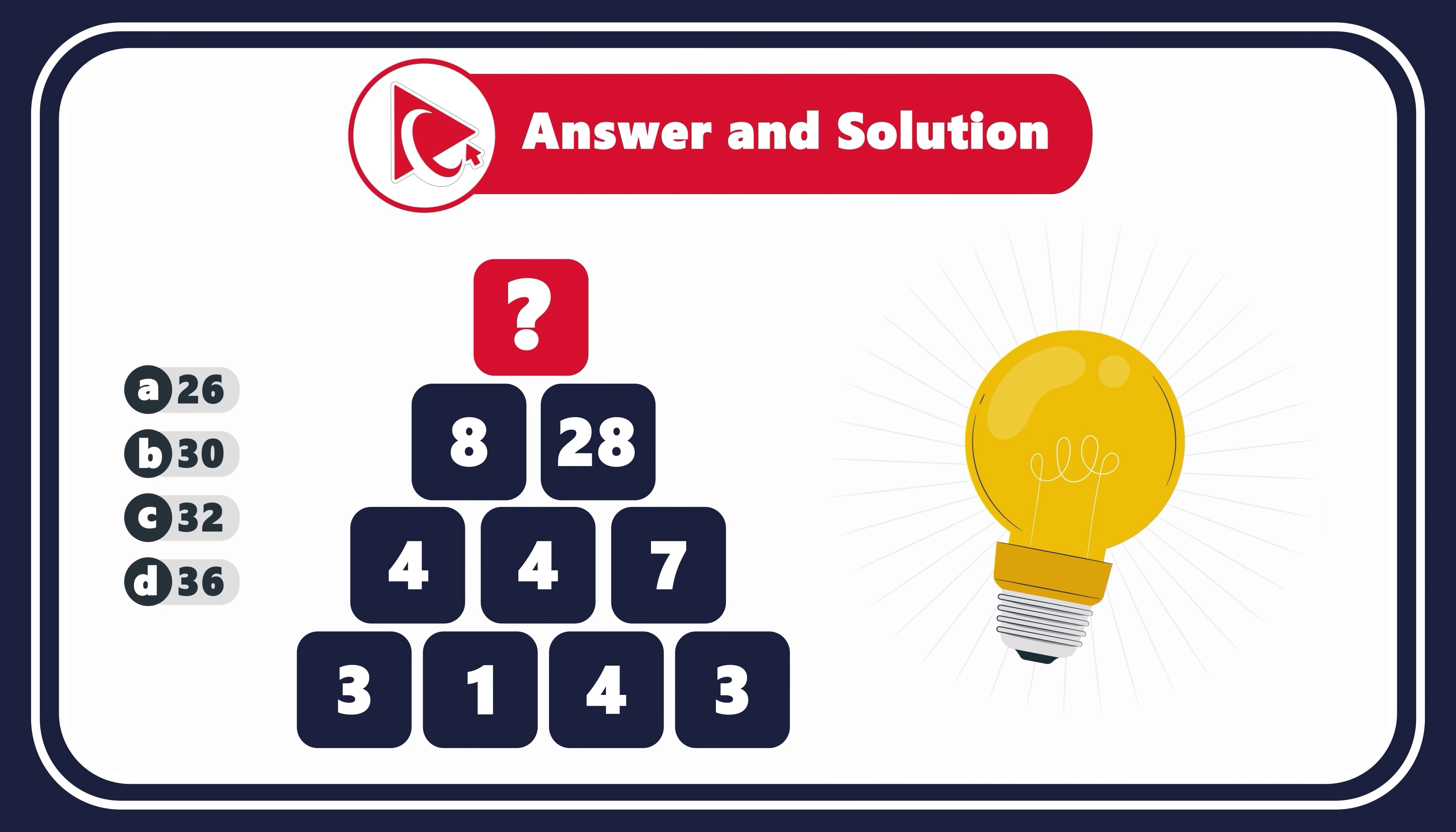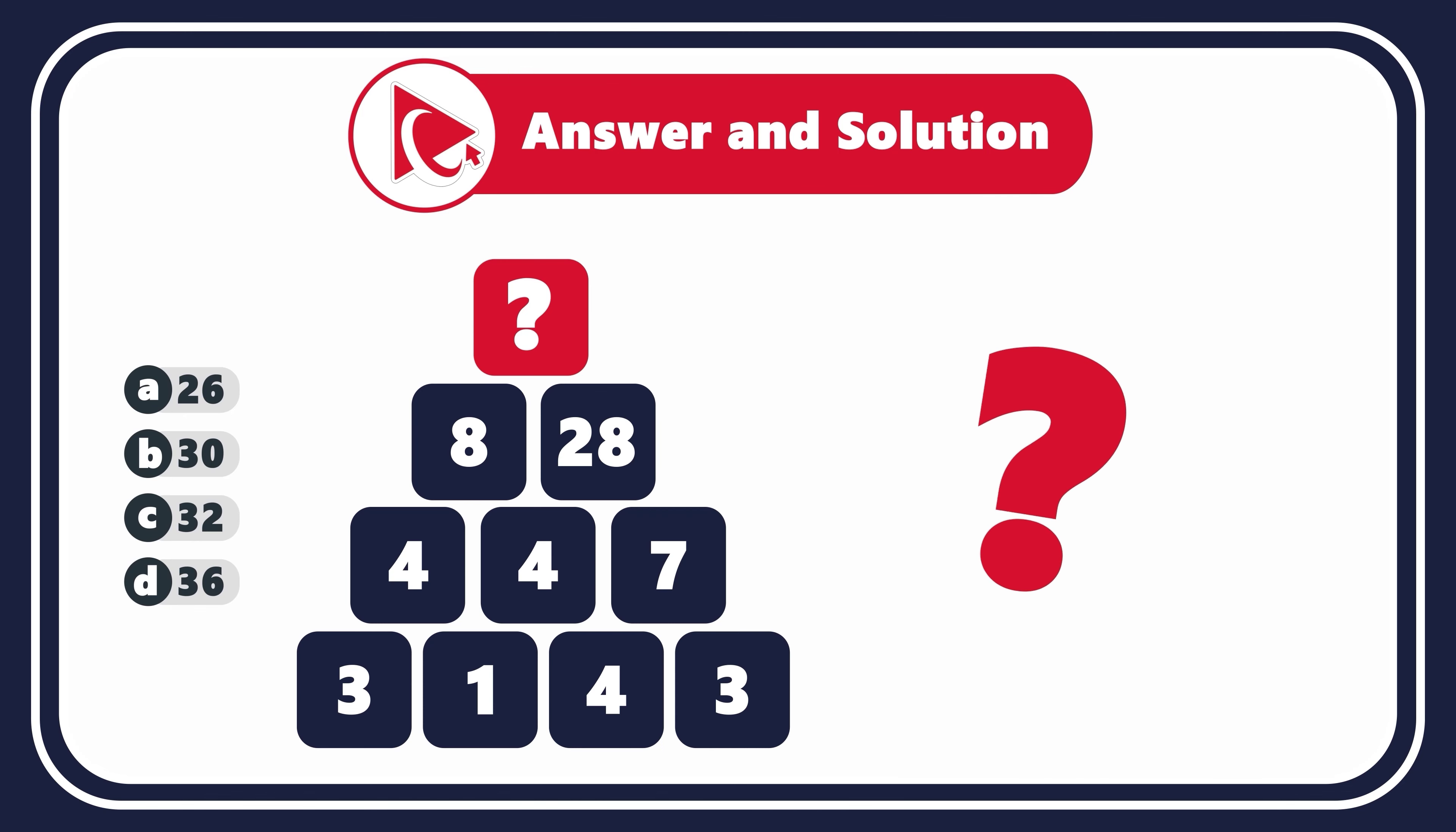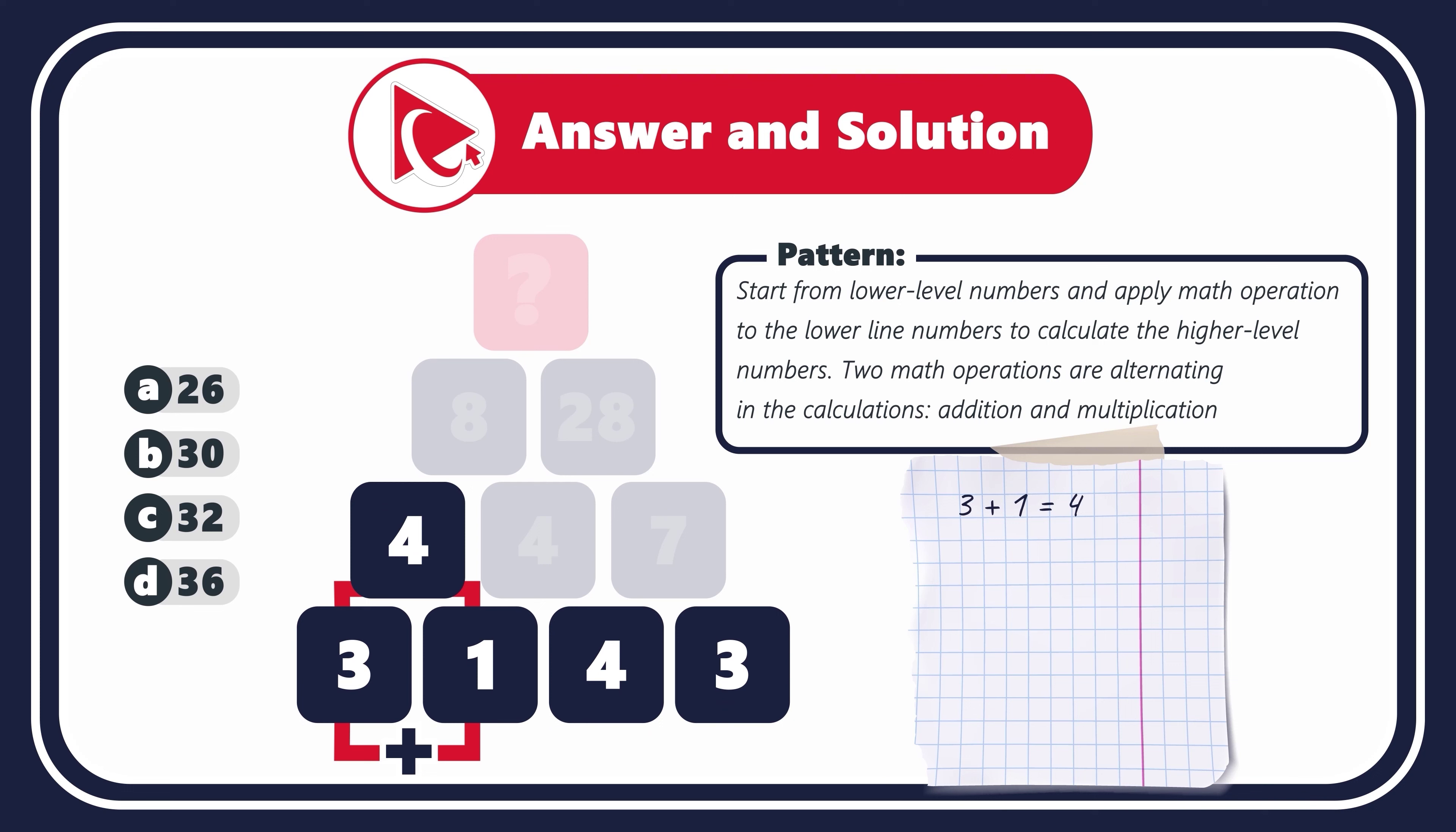Are you ready? I think I found my answer. Remember how I presented the information to you? I started from the top and went to the bottom. But in fact, you need to start from the low-level numbers and apply math operations to calculate the higher-level numbers. To confuse you even more, there are two math operations alternating in the calculations: addition and multiplication. Let's look at the numbers in the bottom left corner. 3 plus 1 equals 4. But 1 multiplied by 4 equals 4. The next one would be addition again. 4 plus 3 equals 7.